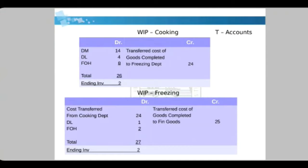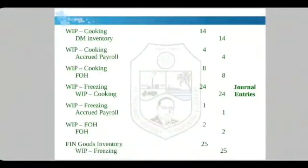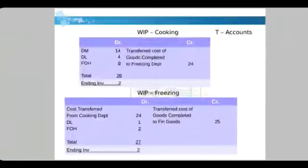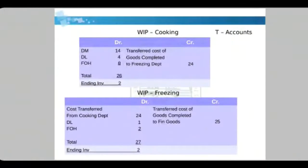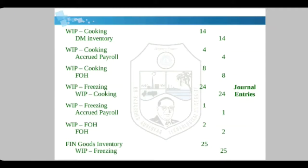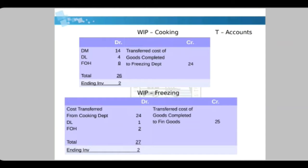The journal entries are: Work in Progress – Cooking debited 14, Direct Material Inventory credited 14. Work in Progress – Cooking debited 4, Actual Payroll credited 4. Work in Progress – Cooking debited 8, Fixed Overhead credited 8. On the freezing side, Work in Progress – Freezing is debited 24 and Work in Progress – Cooking is credited 24. Similarly, entries are made for each item in the table.